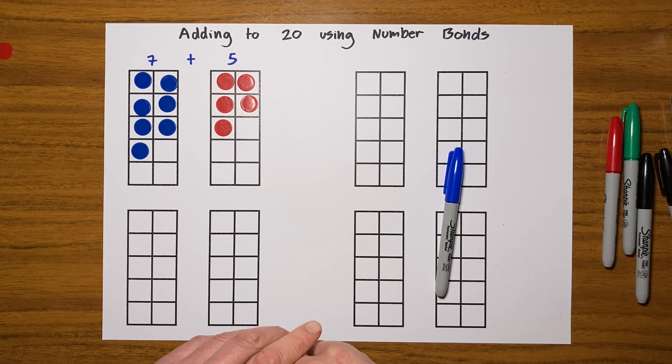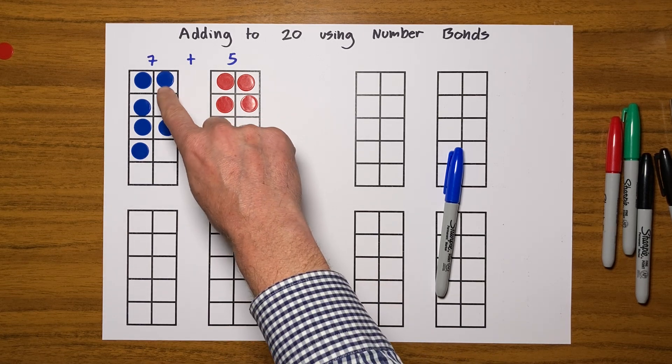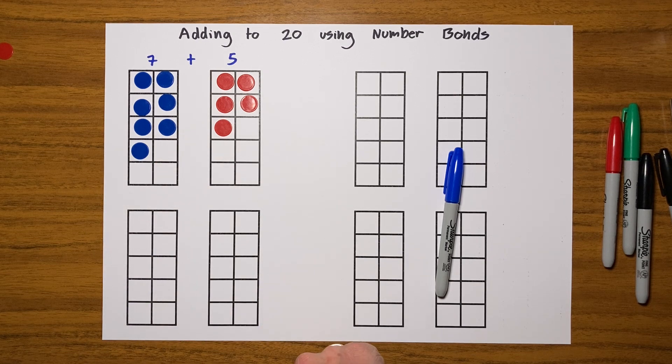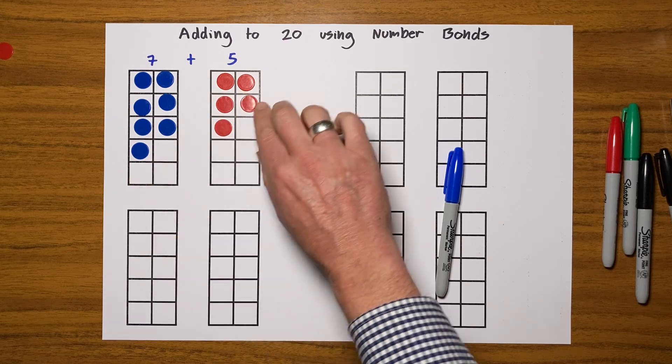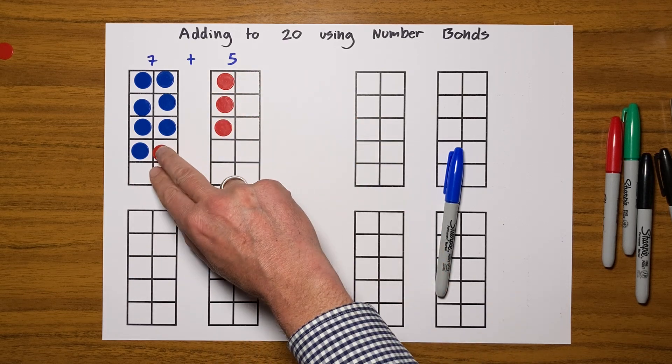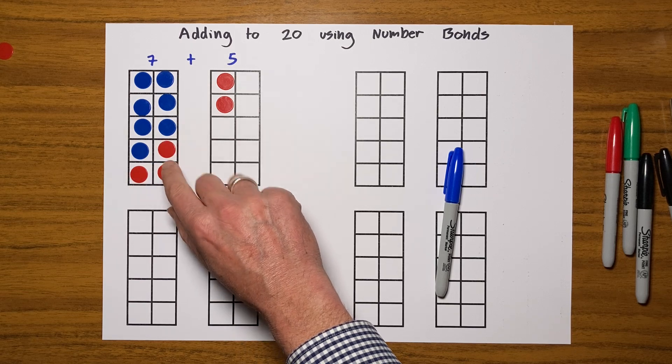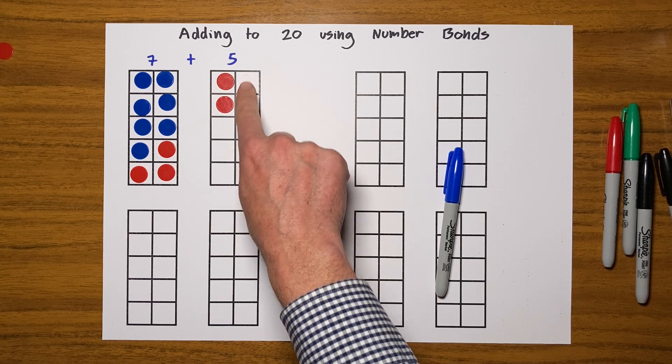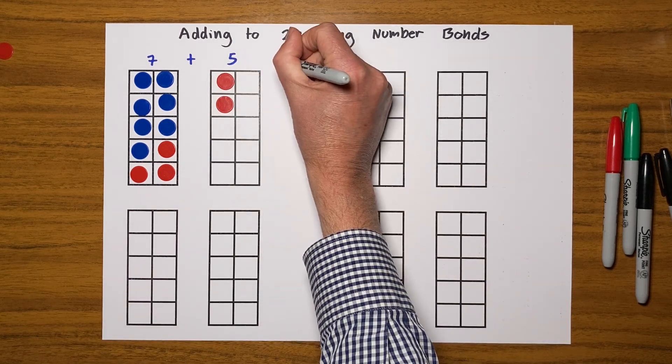So I'm going to show you a quicker way using our number bonds. I'm going to think to myself: I know that with that 7, if I put 3 more in, I get to 10. So let's do that. Let's move 3 from here and add them to that 10. Here we go: 1, 2, 3. Now I've got 10, and I can see very clearly I've got 2 here, so I've got my answer of 12.